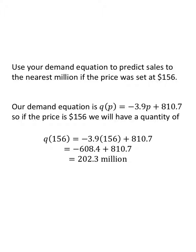Let's take a look at part B. Use your demand equation to predict sales to the nearest million if the price was set at $156. So in my demand equation that we found on the last slide, we put a price of 156 in for P. Negative 3.9 times 156 plus 810.7. I'll do my multiplication and get negative 608.4 plus 810.7. When I combine the two of these, I'll end up with 202.3 million. And of course, I am capable of reading instructions. So my answer would be 202 million that I would type in. I wouldn't put that .3 because I need to pay attention to my rounding. So 202 million phones is the demand at the price of $156.